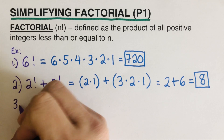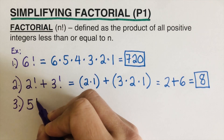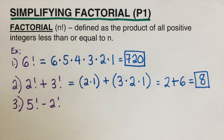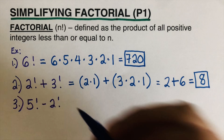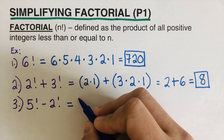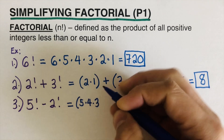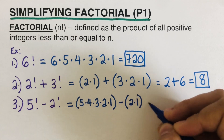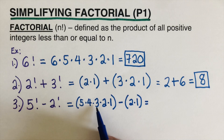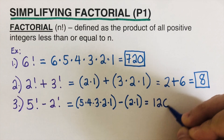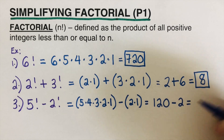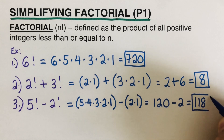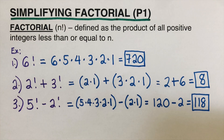Now try this one on your own: 5 factorial minus 2 factorial. Pause the video and check your answer when you're done. 5 factorial is 5 times 4 times 3 times 2 times 1, which equals 120. Minus 2 factorial, which is 2 times 1 equals 2. So the answer is 120 minus 2, which is 118.